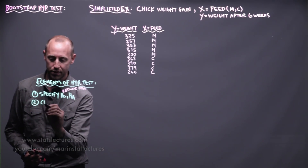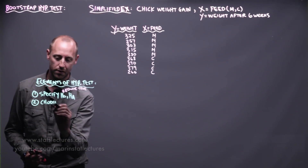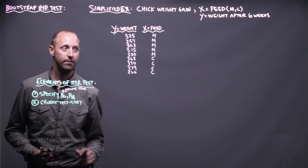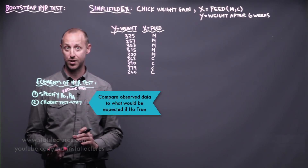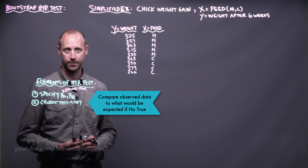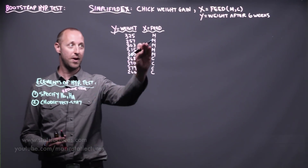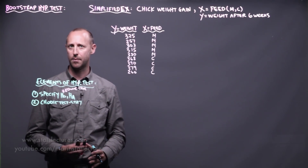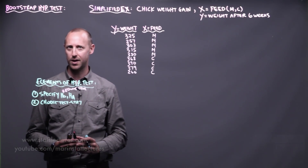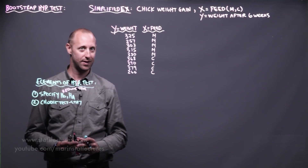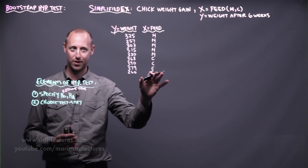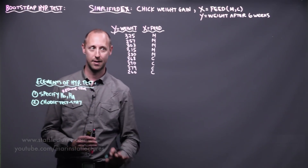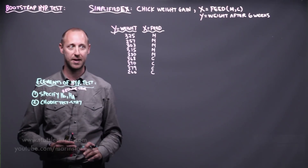They also all involve choosing some test statistic — comparing what's observed in our sample to what's expected in some way. We can compare the mean weight for the two different diets, we can compare the median weight for the two diets, or maybe we want to compare the 90th percentile of weights for the two different diets. We want some measure and a test statistic that compares the observed and expected in some way.